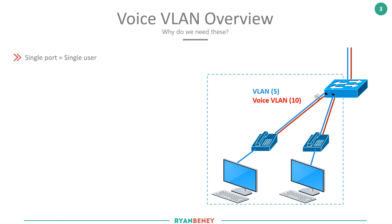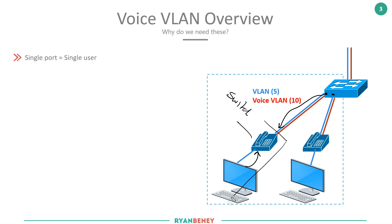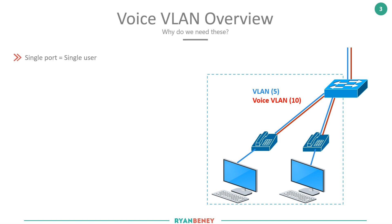What voice VLANs allow us to do is use one physical port for one individual user and their telephone. This port would have a phone plugged into it, and on the back of the phone there's actually a built-in switch — you plug your PC into that built-in switch. So you have one port serving one user: both their IP telephony and their desktop device.